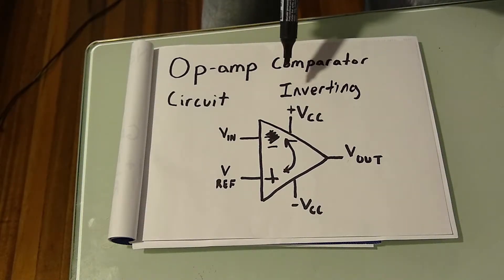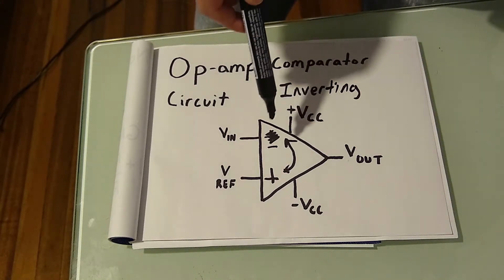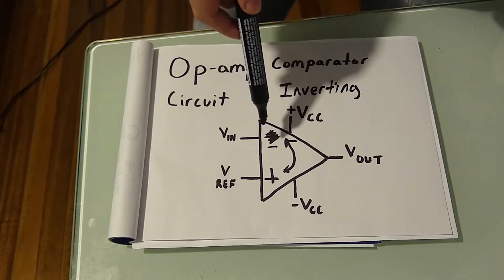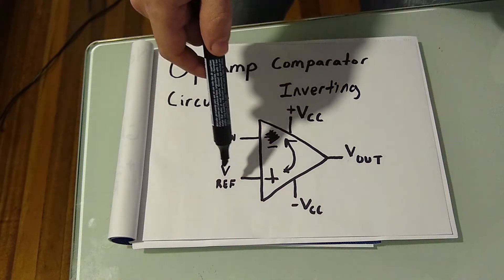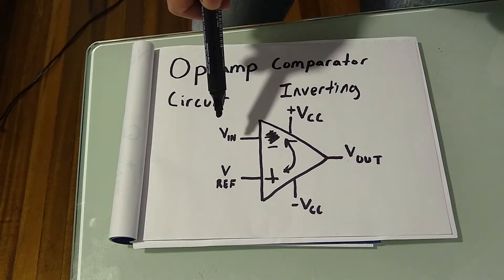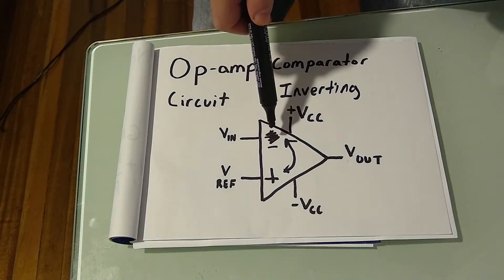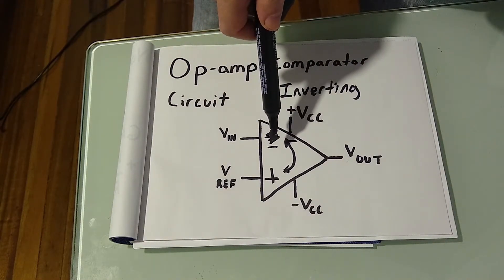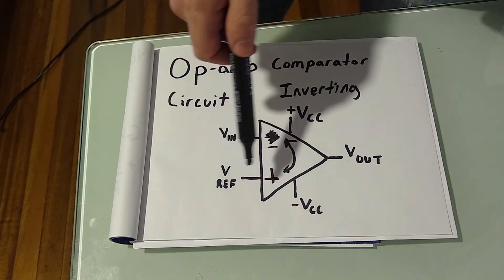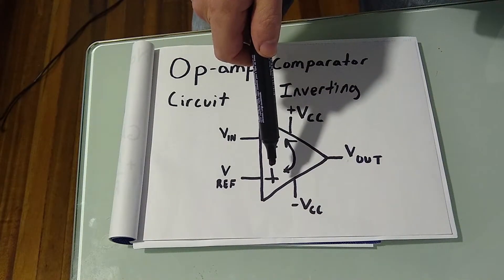You can also create an inverting op-amp comparator circuit. To do this, you simply swap your input and your reference voltage. So before, our voltage in was at our positive pin. Now it's at the negative pin of the op-amp, and our voltage reference is at the positive rather than the negative.